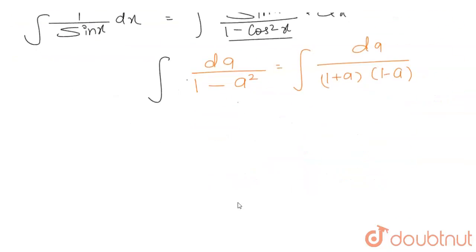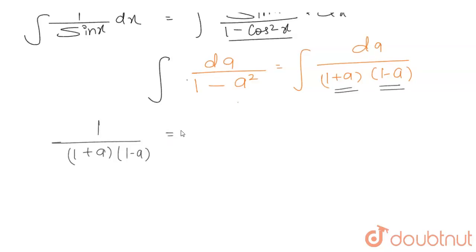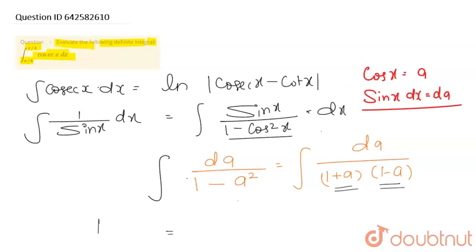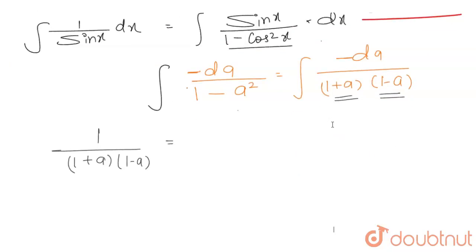अब आपका next step क्या होगा? 1 upon (1 plus t)(1 minus t) को partial fractions में लिखेंगे: A upon (1 minus t) plus B upon (1 plus t)। Cross multiply करने पर, 1 equal to A(1 plus t) plus B(1 minus t) — यह एक identity बनेगी।